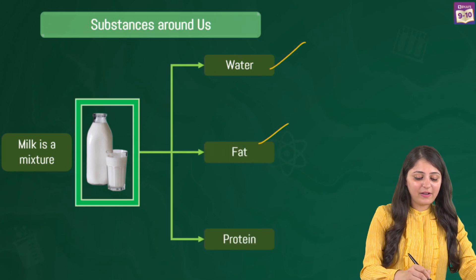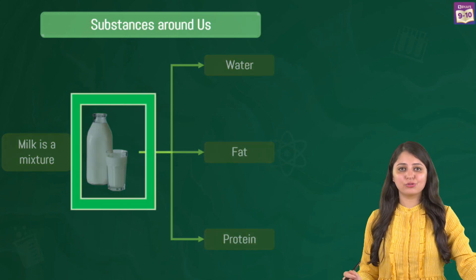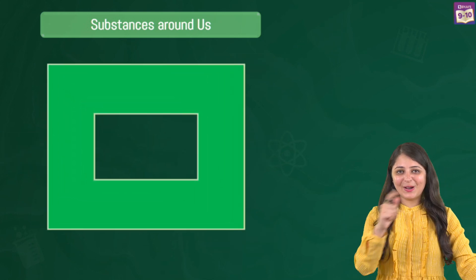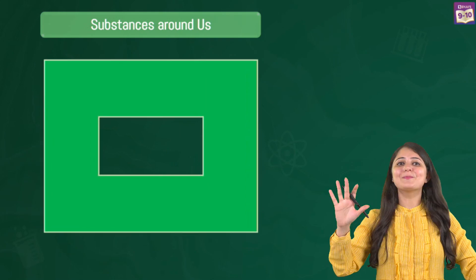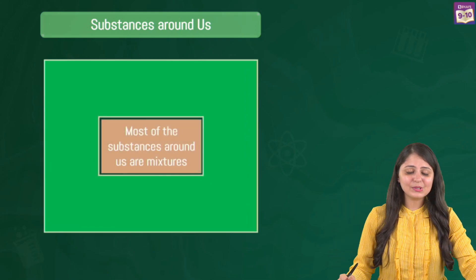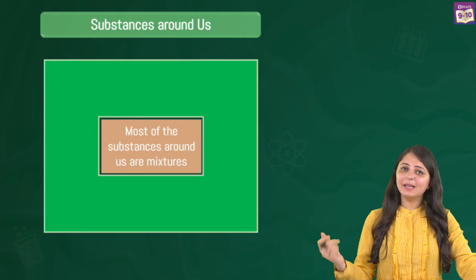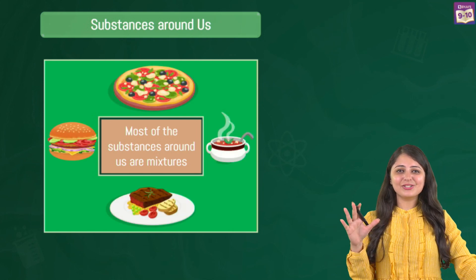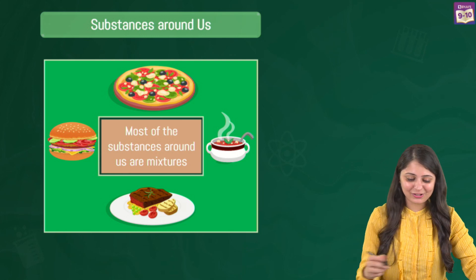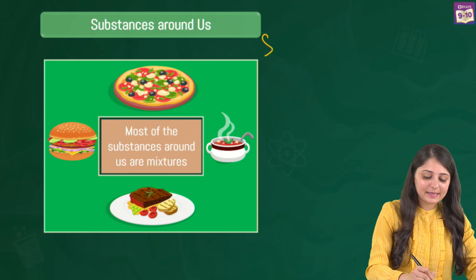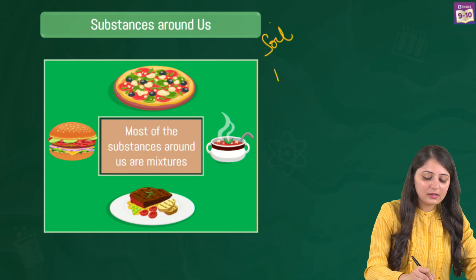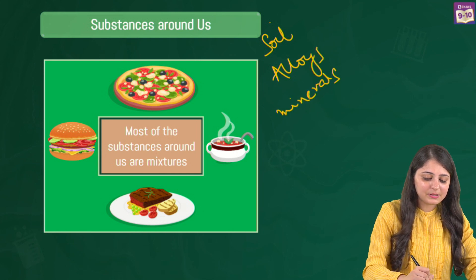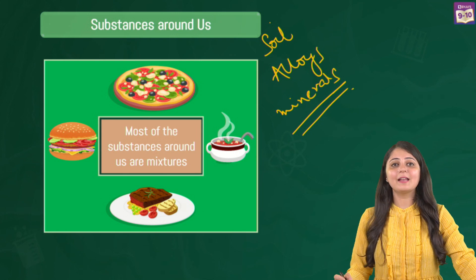Now let's go back to the case of milk. Milk is actually a mixture — it contains water, fats, and proteins, all mixed together. So now you know that milk is not a pure substance. Most of the substances you see around you are mixtures — interesting delicious food items, soil, alloys, minerals — all these substances are mixtures.